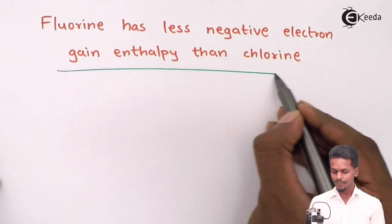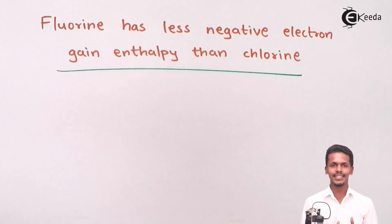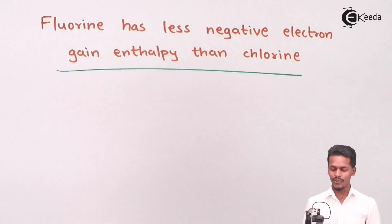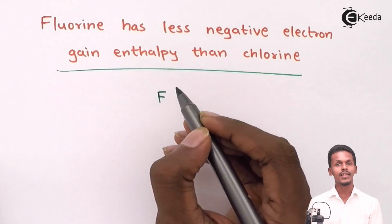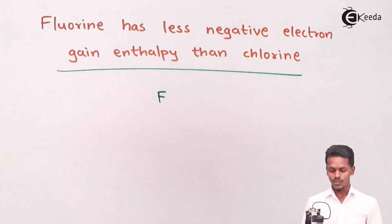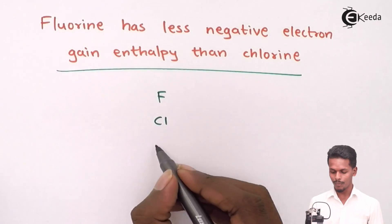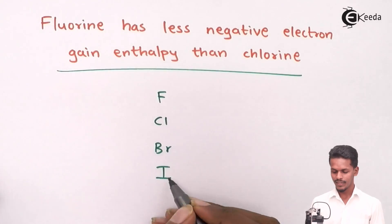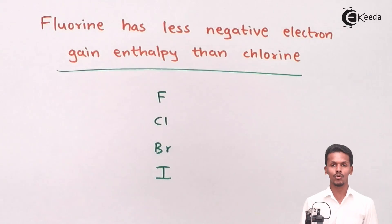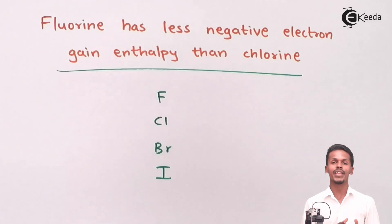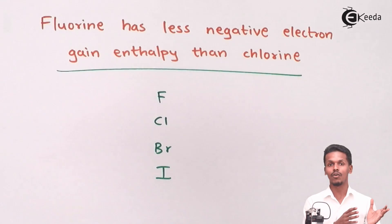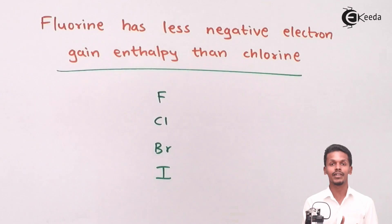Before that, let me tell you that when it comes to the halogens like fluorine, chlorine, bromine, and iodine — fluorine is the first one in the family. So fluorine comes first, then chlorine, then bromine and iodine. This is what we are going to talk about regarding the group, as we have already discussed the trend of electron gain enthalpy in groups, and we also had a section where we discussed the trend in periods.